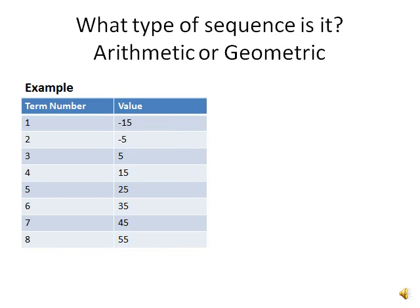Let's look at the term number and values to decide if this is an arithmetic or geometric sequence. Our values are negative 15, negative 5, 5, 15, 25, and so on.